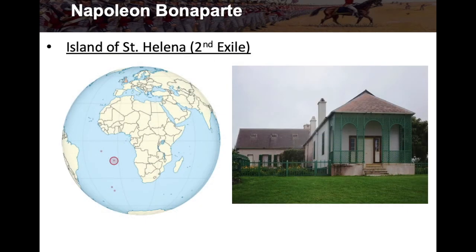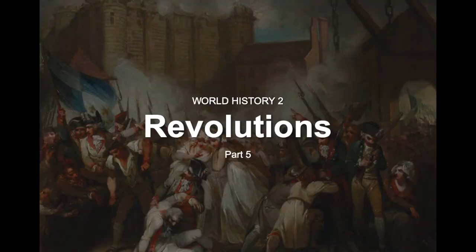Napoleon is exiled to St. Helena — his second exile — much farther away than Elba. Here's France up on the globe, Elba off the coast of Italy was the first exile, and his second exile is way down in the Atlantic off the coast of Africa — the island of St. Helena. Here's Longwood House, which still stands today. That's where he lived and died in exile. And that's it for Napoleon.